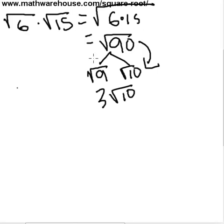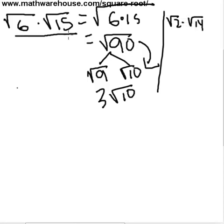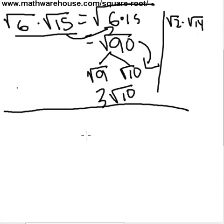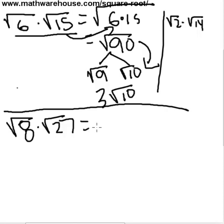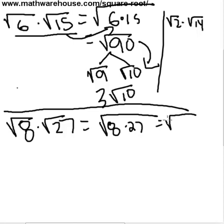For root 6 times root 15, and for root 2 times root 14 before it, what we did was simply rewrite them under one radical and then look to simplify that radical. Now let's look at a new example: the square root of 8 times the square root of 27. You can rewrite it as the square root of 8 times 27, which is the square root of 216, and then try simplifying this.